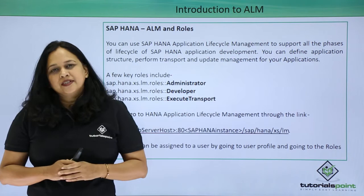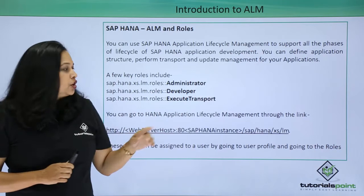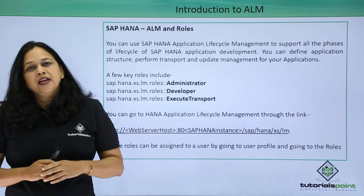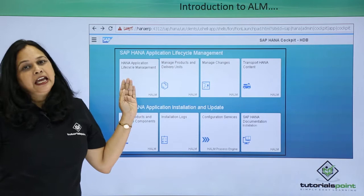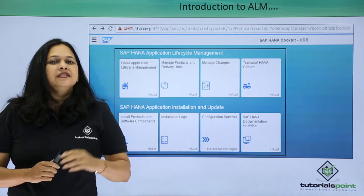But how to access ALM? You can open SAP HANA ALM in two ways. One, through the URL given here. The second way is through SAP HANA cockpit. In this slide, you can see SAP HANA ALM in SAP HANA cockpit.